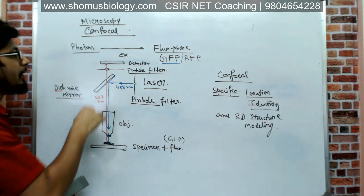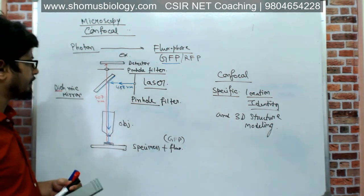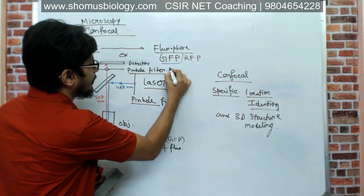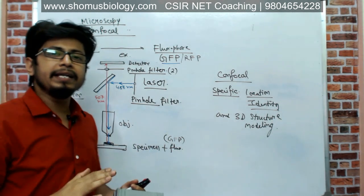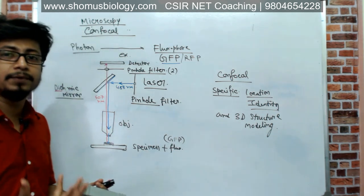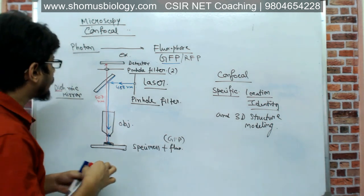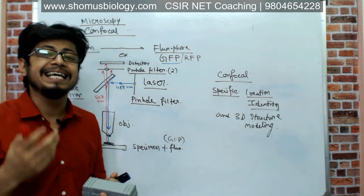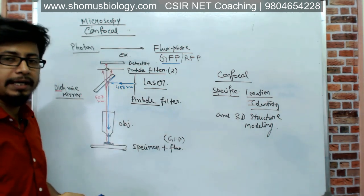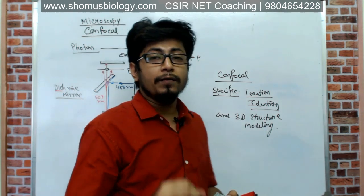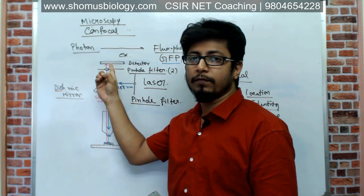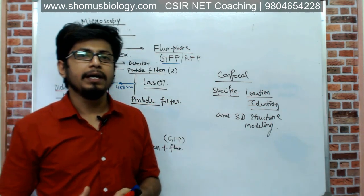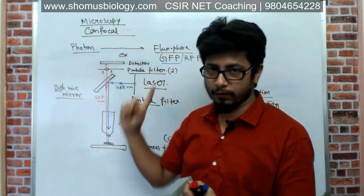Two pinhole filters are present: one after the laser beam and a second one before the detector. The first pinhole focuses the laser specifically. The second pinhole filter cuts out any other unwanted emission of fluorescence — non-specific or background fluorescence noise — and only allows emission from the specific region of the cell to pass through and hit the detector. That is the key modification from wide field fluorescence microscopy to confocal microscopy.